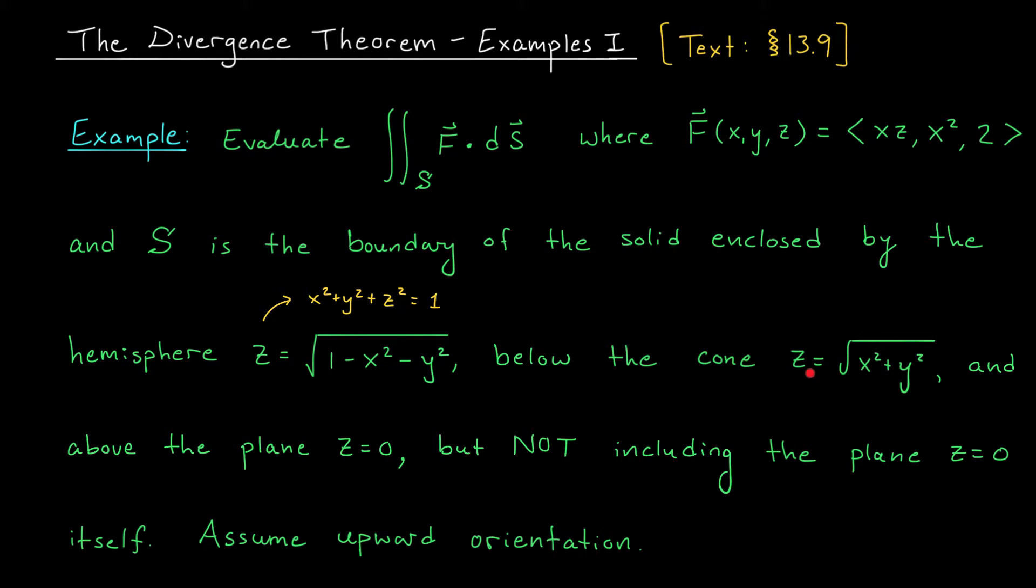We also have this cone z equals root x² plus y². We've worked with this cone several times before. This is an upward opening cone that makes an angle of π over 4 with the xy plane. We're also given the plane z equals 0, and apparently these three surfaces together enclose some solid in R³. S is the boundary of this solid, but we're ignoring the plane z equals 0, so we might be omitting one of its faces.